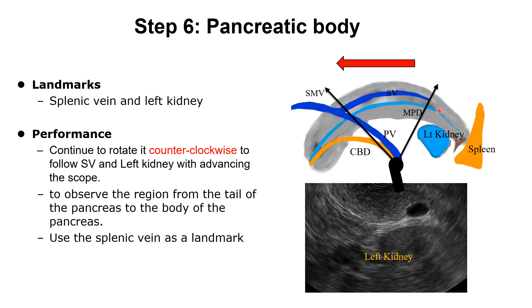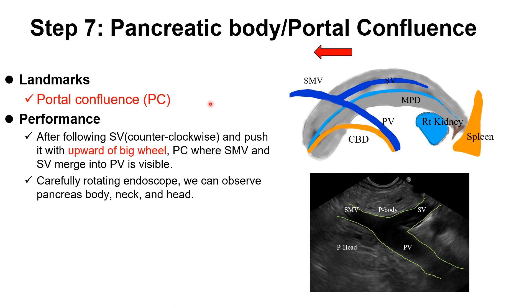Step 6: Pancreatic body. Continue to rotate the endoscope counterclockwise, following the splenic vein. Step 7: Advancing with the scope from pancreatic tail to pancreatic body. Pancreatic body and portal confluence — a good landmark here is the portal confluence. After following the splenic vein with counterclockwise rotation and slight scope torque, we can see the portal confluence on EUS imaging — SMV and splenic vein merging into the portal vein. Carefully rotating the scope, we can observe the pancreatic body, neck, and head area. The portal confluence is a very important landmark in these steps.